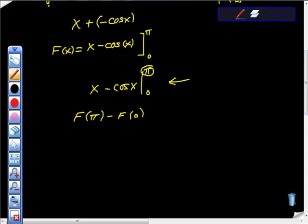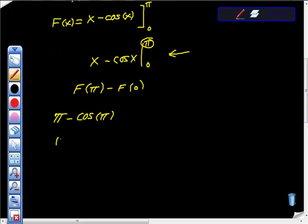So I'm going to get x, b is pi, so I'm going to get pi minus cosine pi, right? Pi minus cosine pi, well, pi minus cosine of pi.